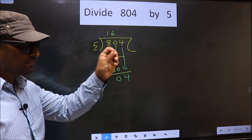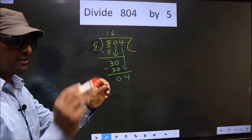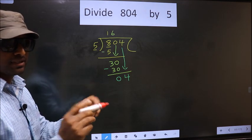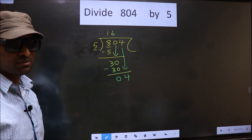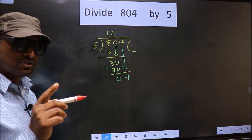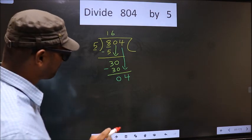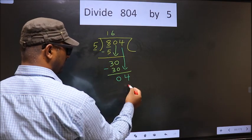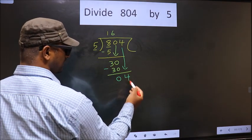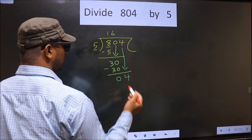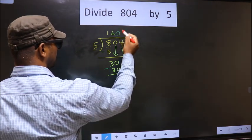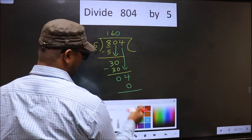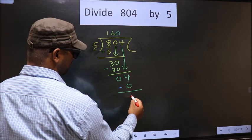Bringing the number down and putting a dot and taking 0, both at the same step — you are not supposed to do that. Instead, what you should think of is: what number should we write here? If we write 5 here, that is larger than 4. So what we do is, we take 0 here. So 5 into 0 is 0. Now you subtract: 4 minus 0 is 4.